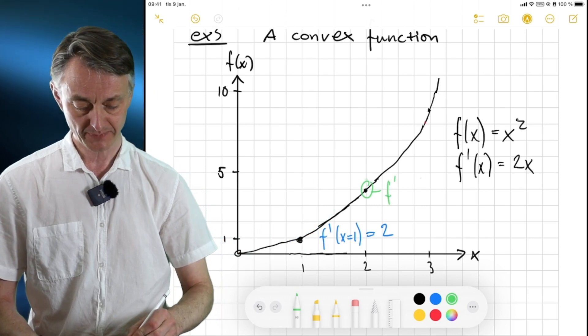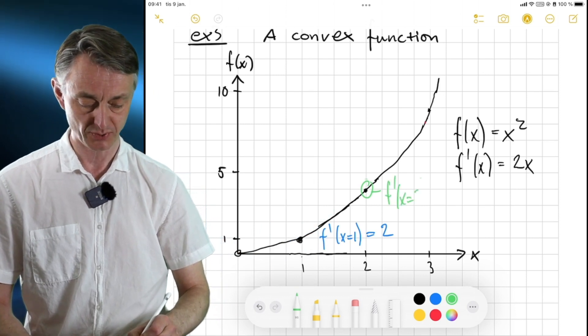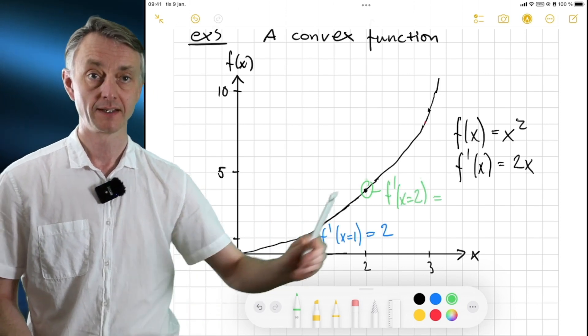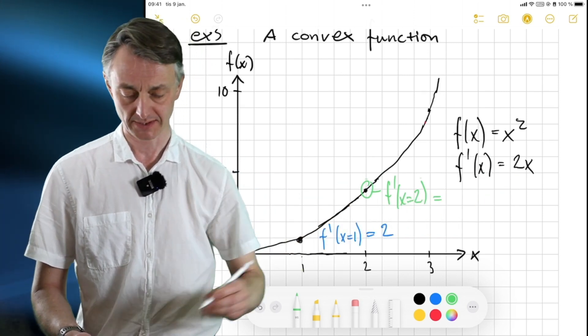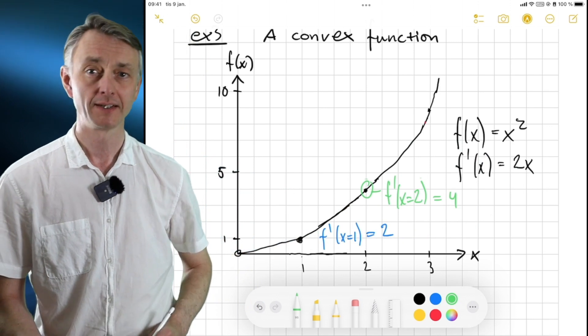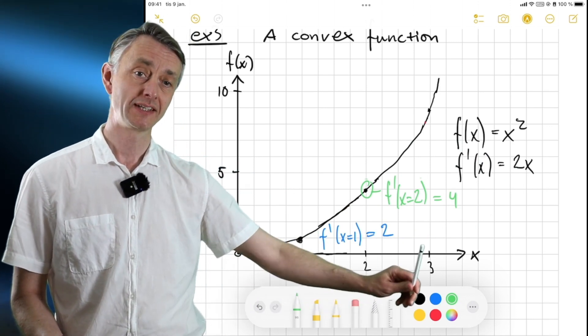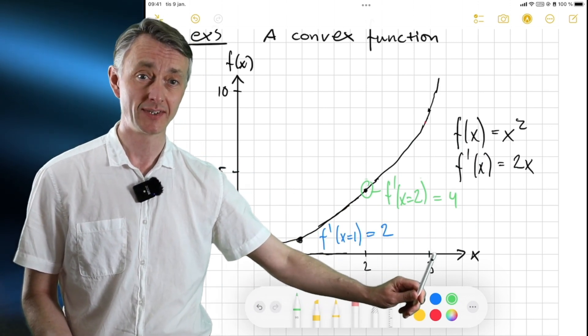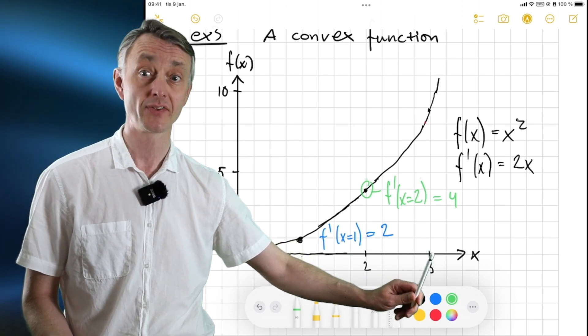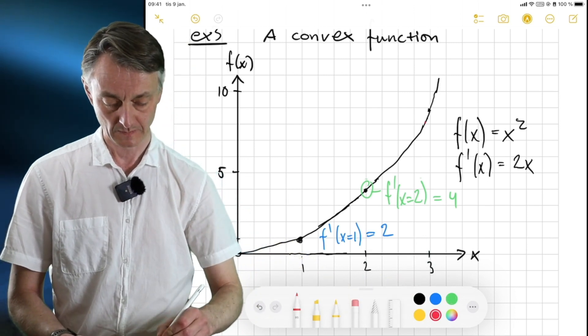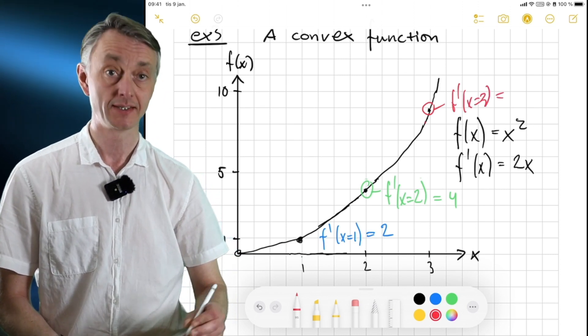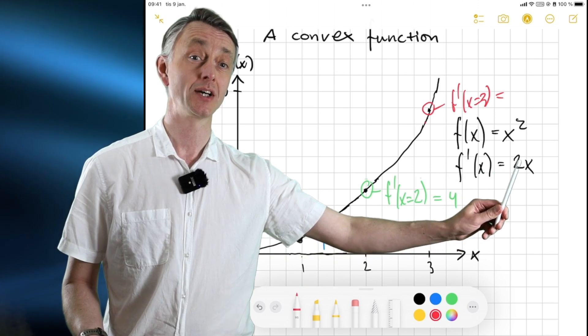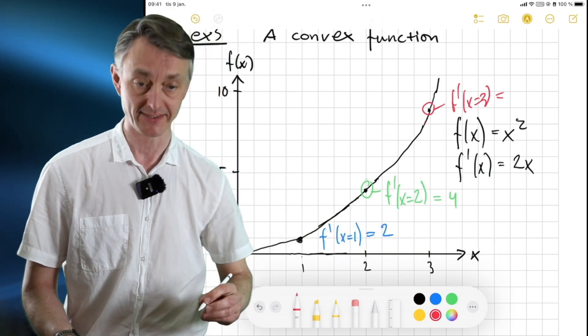Well, f prime when x is equal to 2, we plug in a 2 here. So, it's 2 by 2. That's 4. And finally, what about here? If we evaluate the derivative at the point when x is 3, f prime when x is equal to 3 is equal to 2 times 3 is 6.